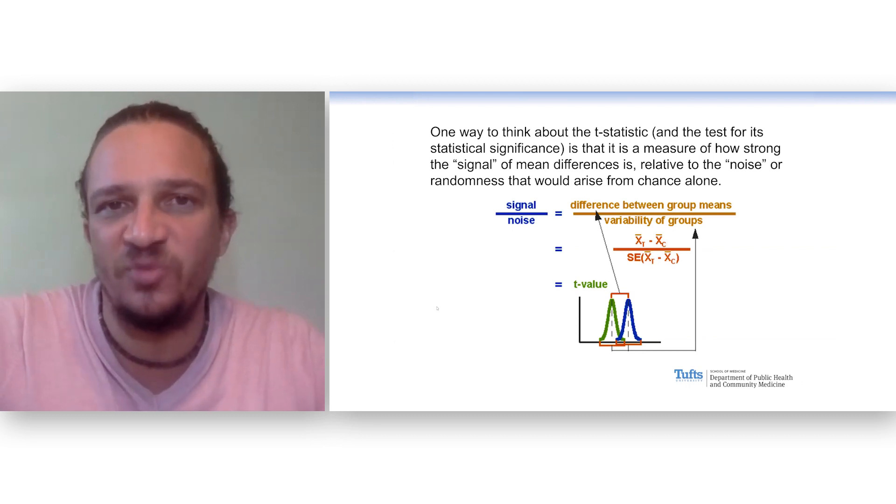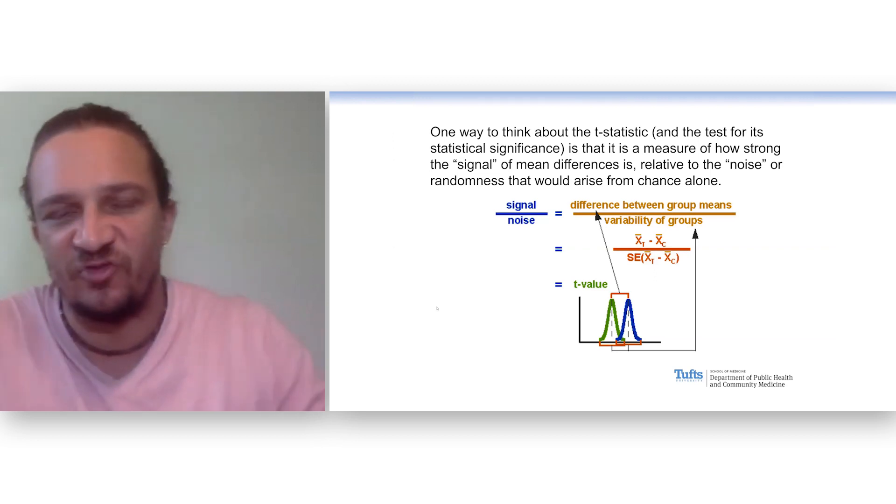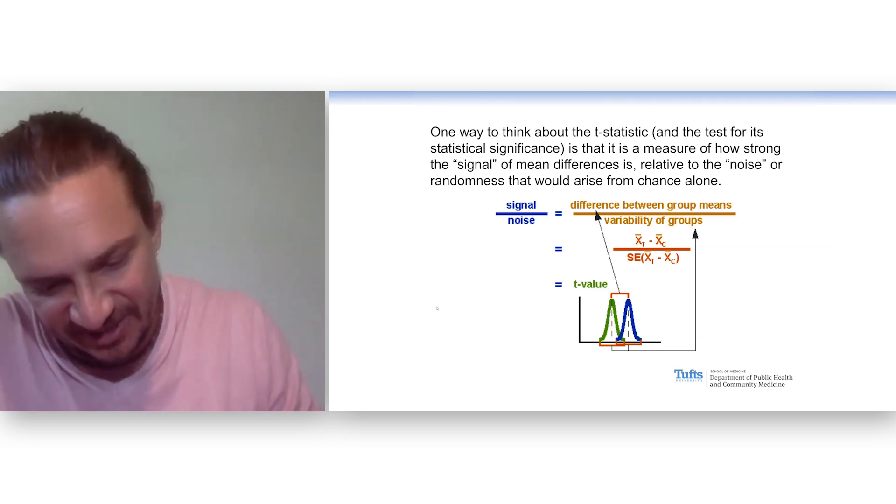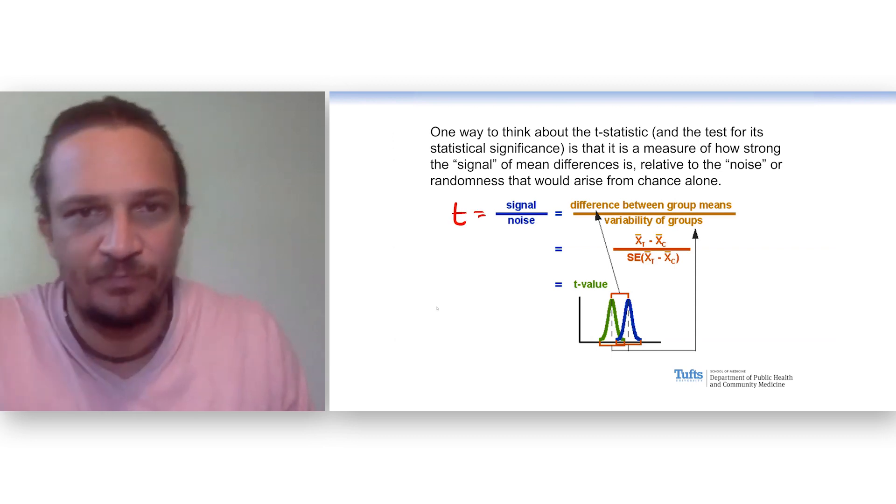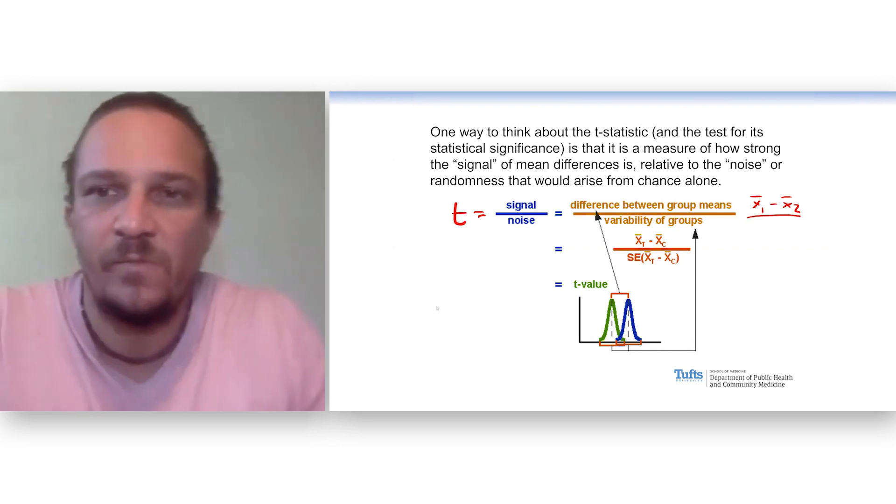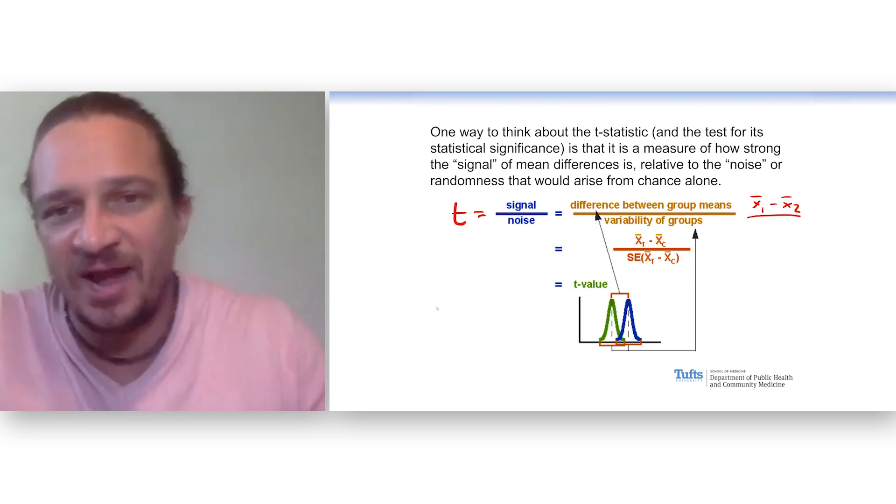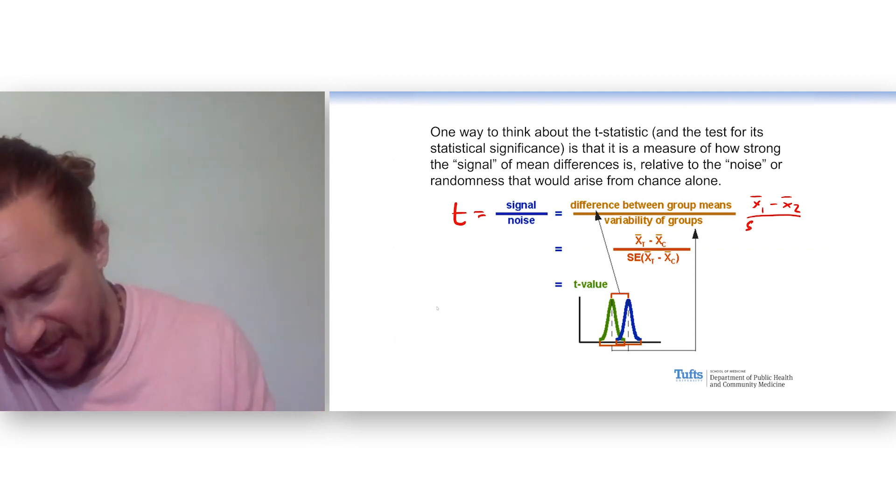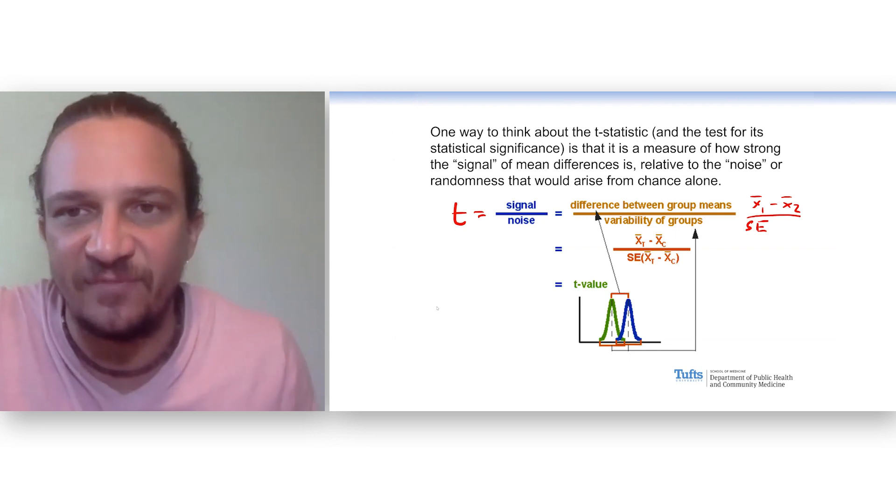What is the difference between the two groups, between their means, relative to the noise or random variability that would arise just from chance alone? So when we calculate this T-statistic, in the numerator we'll see what is the difference between the two means. And what it gets divided by is what is the standard error of that difference in means.